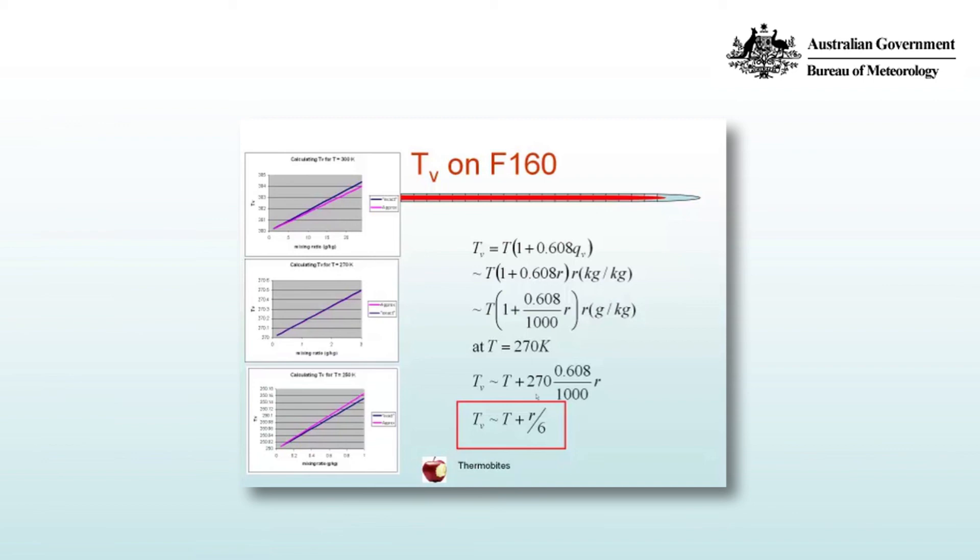So this is a pretty useful approximation, and we'll use it throughout the course. Whenever you want to calculate the virtual temperature, read the temperature off a skew T log P, read the mixing ratio and divide by 6 and add them. And you'll find that the difference between the virtual temperature and the temperature in most cases is often quite small.